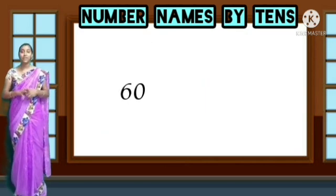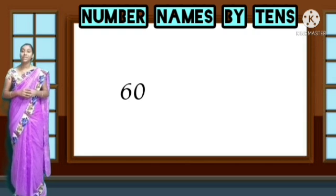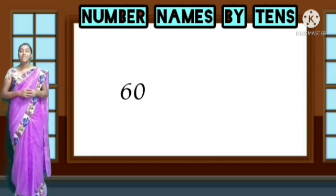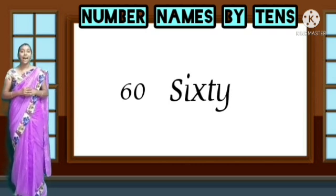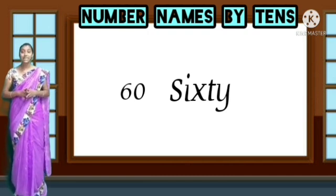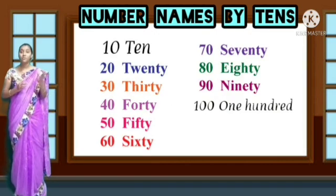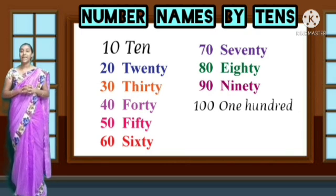Now look at the number here — it is 60. What is the name of this number? Sixty. You write the spelling of six and add T-Y: S-I-X-T-Y, sixty. Remember, from 20 till 90, all these number names end with T-Y.